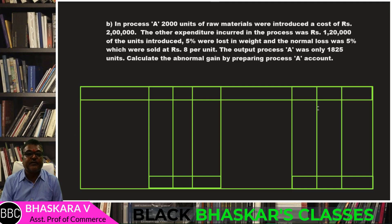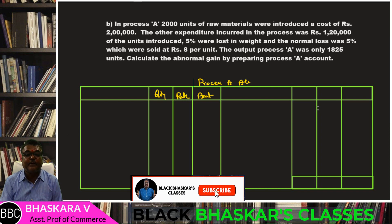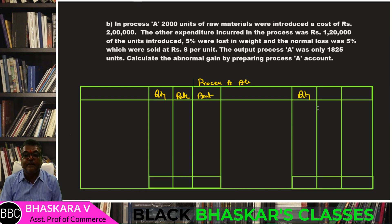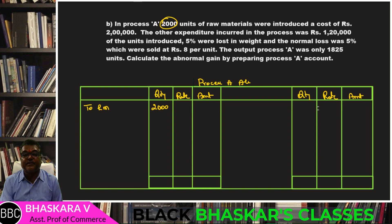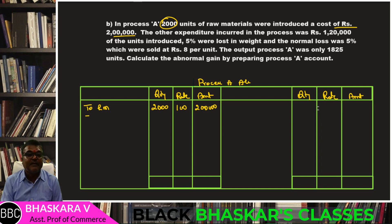I will now prepare the Process A account. The account has columns: quantity, rate, and amount on both debit and credit sides. On the debit side: raw material introduced — 2,000 units at Rs. 2,00,000. Other expenditure — Rs. 1,20,000. Total debit side — Rs. 3,20,000.